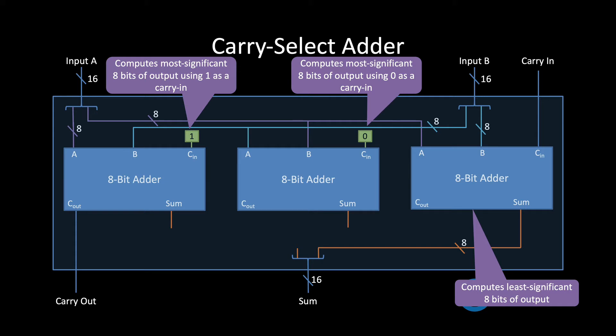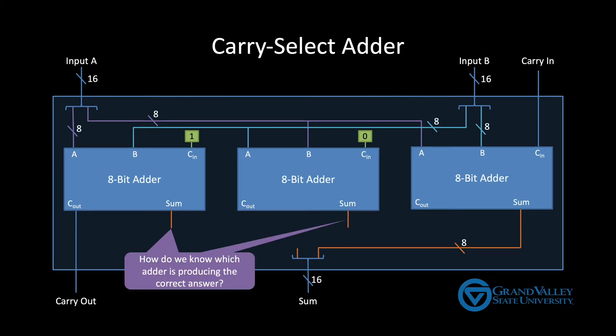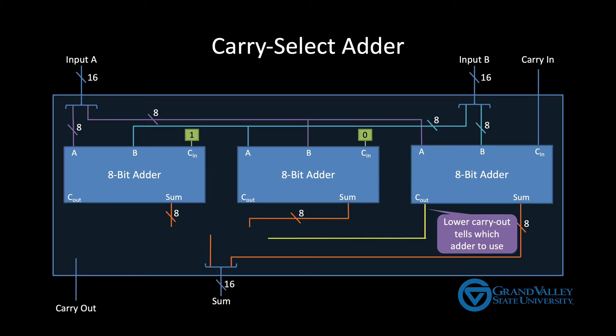The output from the rightmost adder is always part of our 16-bit output. However only one of these two adders is producing the correct bits that go in the upper part of that 16-bit answer. The output of the adder producing the correct bits of course should be included in the final output and the output of the other adder should just simply be ignored. Now that raises the obvious question, how do we know which adders output should be used?